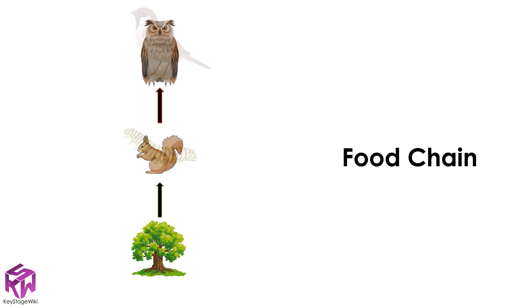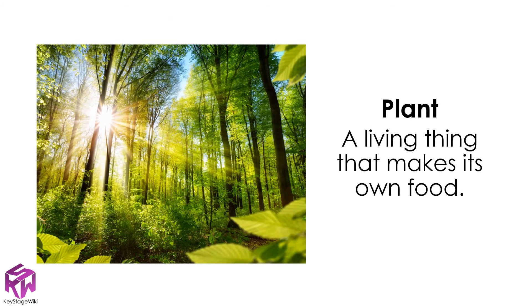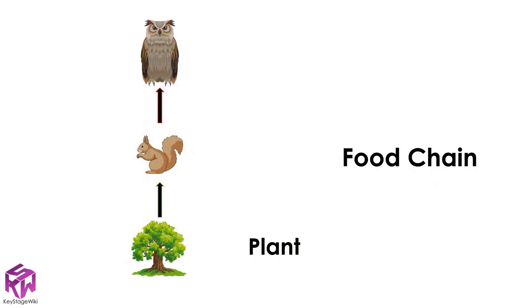Have you noticed how all the food chains seem to begin? The food chains have all started with a plant. What makes plants special is that they can make their own food. After the plant in a food chain, we have animals.